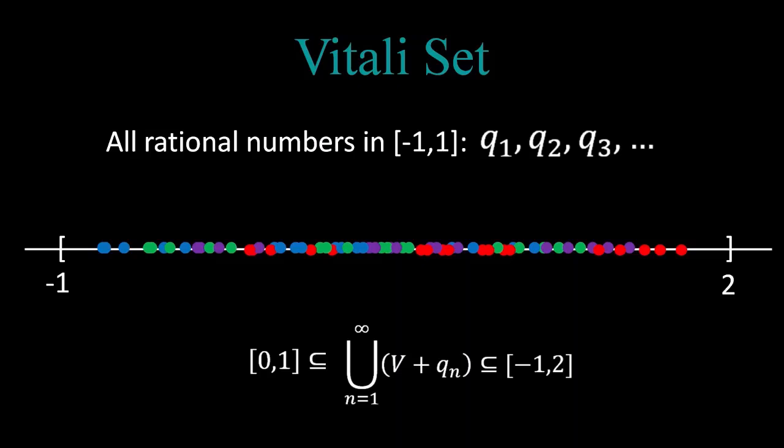Why is that? Any real number R in [0,1] belongs to some equivalence class and differs from the corresponding representative in the Vitali set by a rational number. So V plus that rational number will cover the R of interest.